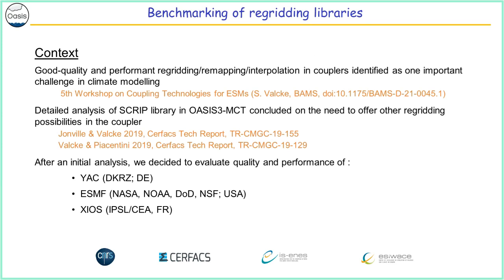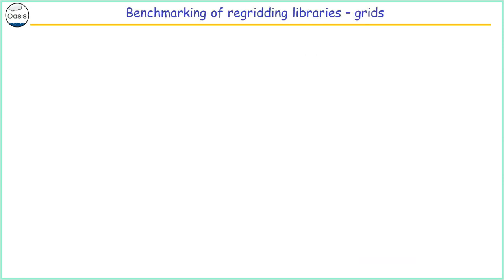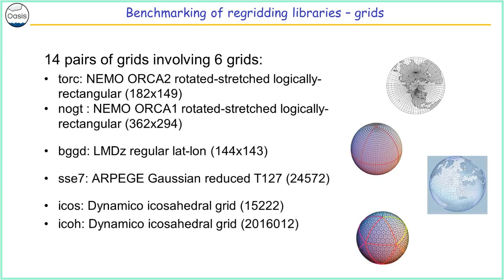In this benchmarking, we do tests with 14 pairs of different grids involving the true resolution of the NEMO ocean grid, one regular lat-long grid, a Gaussian reduced grid used in our atmospheric model at Meteo France, and two resolutions of an icosahedral grid. We test four different functions: sinusoid, harmonic, vortex, and one that reproduces a strong gradient representing the Gulf Stream.